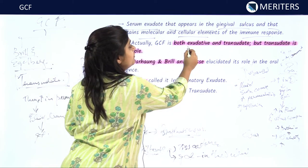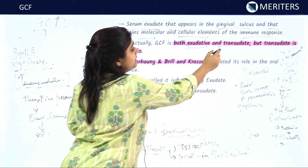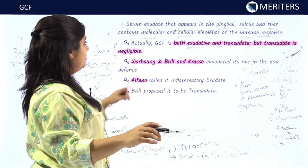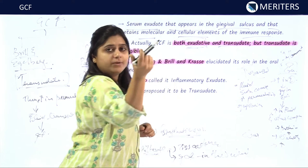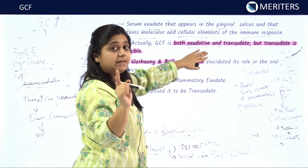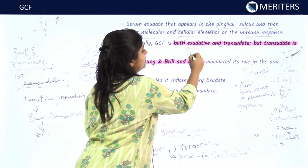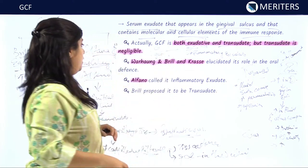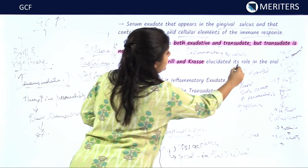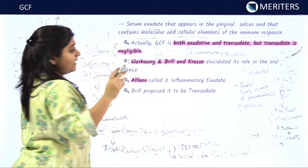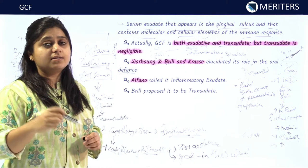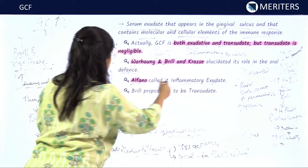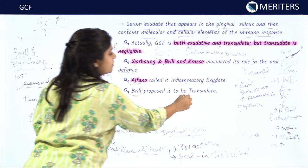GCF is both an exudative and transudative fluid. Primarily the initial fluid is a transudate and later it is an exudate, so primarily GCF is classified as an inflammatory exudate. Verhong, Brill and Cross elucidated its role in the oral defense mechanism, noting various antibodies present in GCF — the dominant antibody is IgG. Alfano called GCF an inflammatory exudate, while Brill proposed it as a transudate.